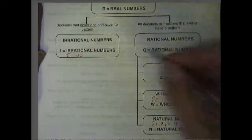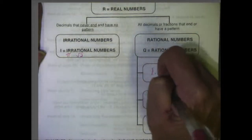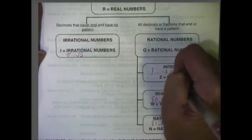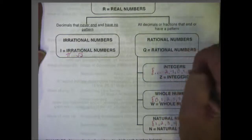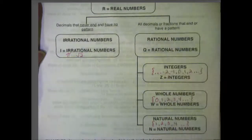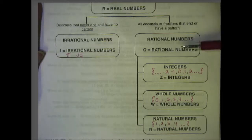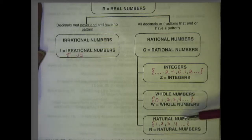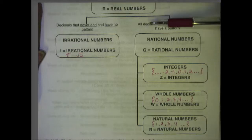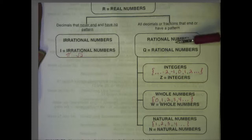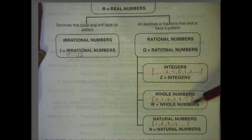Integers are going to include a little bit more. They're going to go from both directions, and so they will include all of the negative numbers, 0, and all of the positive numbers. Like the numbers underneath it, they are not going to include any fractions or decimals, unless they simplify to one of these numbers. Now, rational numbers include all of these types of numbers — natural, whole, and integer are all rational numbers. Decimals or fractions that end and have a pattern are included in rational numbers.